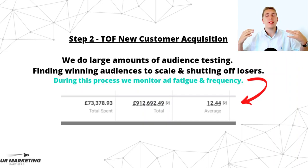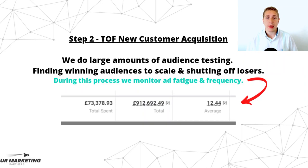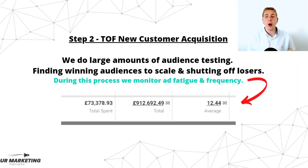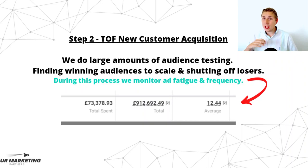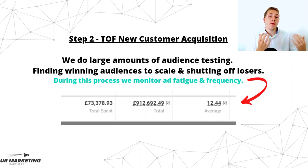Top of funnel is how you scale, how you grow, how you get to these figures — acquiring new customers who can hopefully buy from you time and time again. Once we get our ads that we know work really well, we go into a massive top of funnel audience test. We constantly add in more audiences and test. We find the winning audiences — keep them in and scale — and the ones that don't work, we shut off. We also keep replacing losers, turning them off and replacing with new audiences, and scaling winners up.